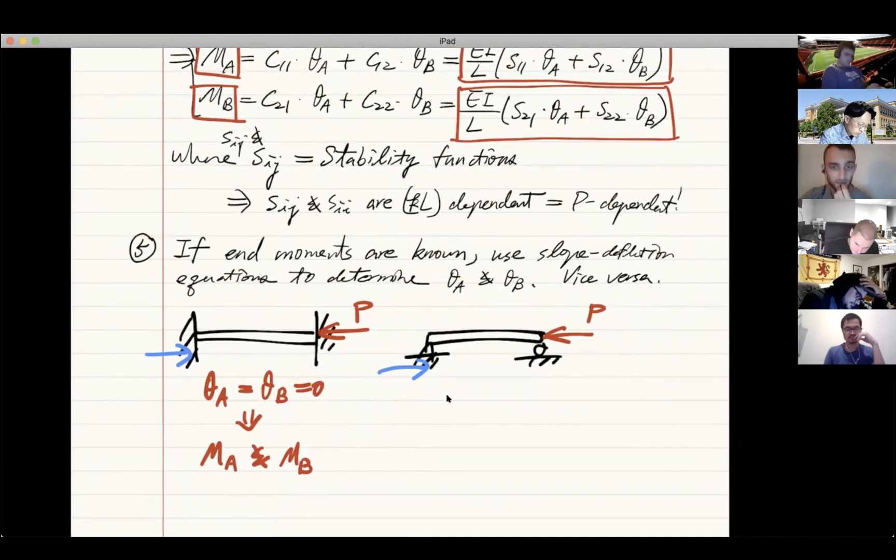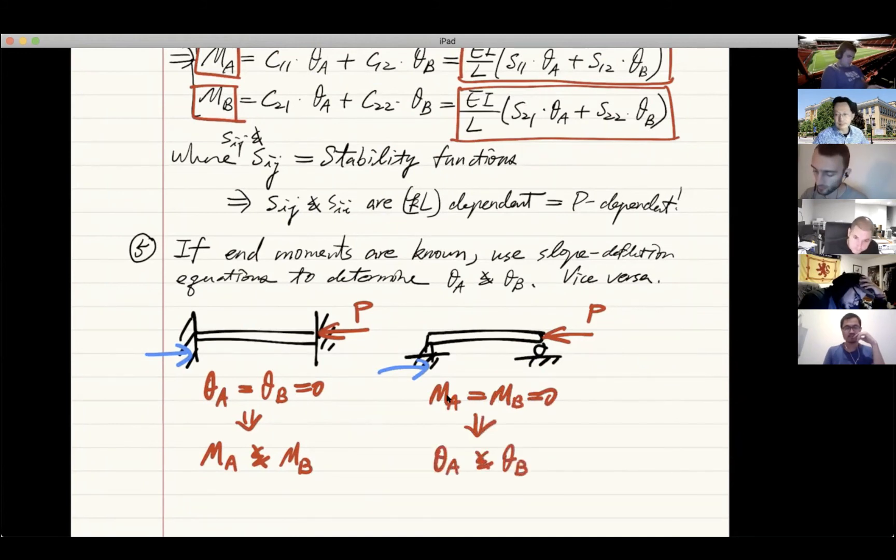In the case on the right, we're going to use because MA is zero and MB is zero, we use it to find theta A and theta B. Is that clear?